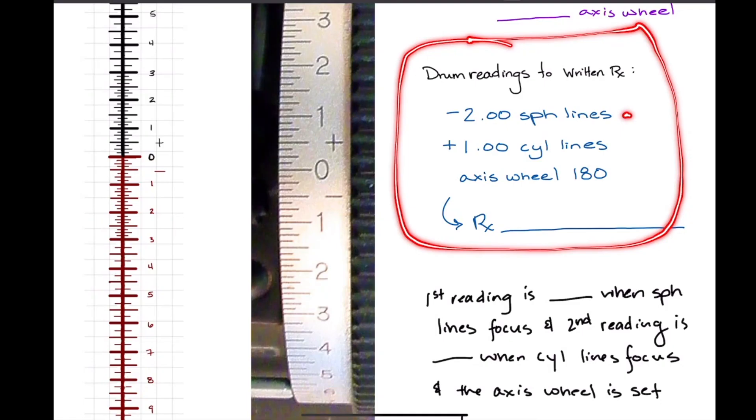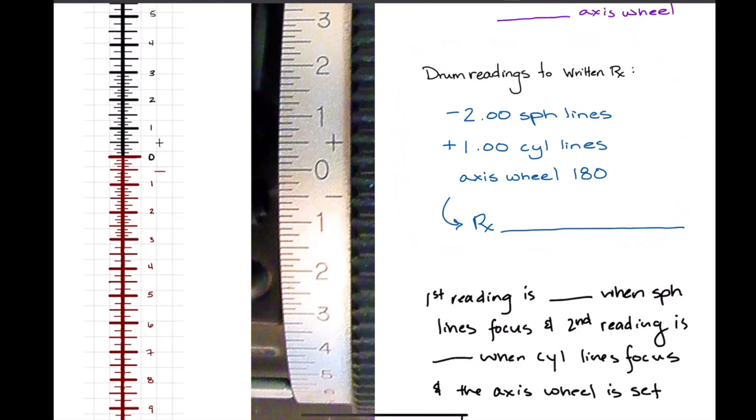Looking at drum readings, let's do a quick one like this and then I'll change it and we'll do some of the ones that are on the eighth diopters. All right, so we've got the sphere lines come into focus at minus 2, and the cylinder lines come into focus at plus 1, and the axis wheel reads...